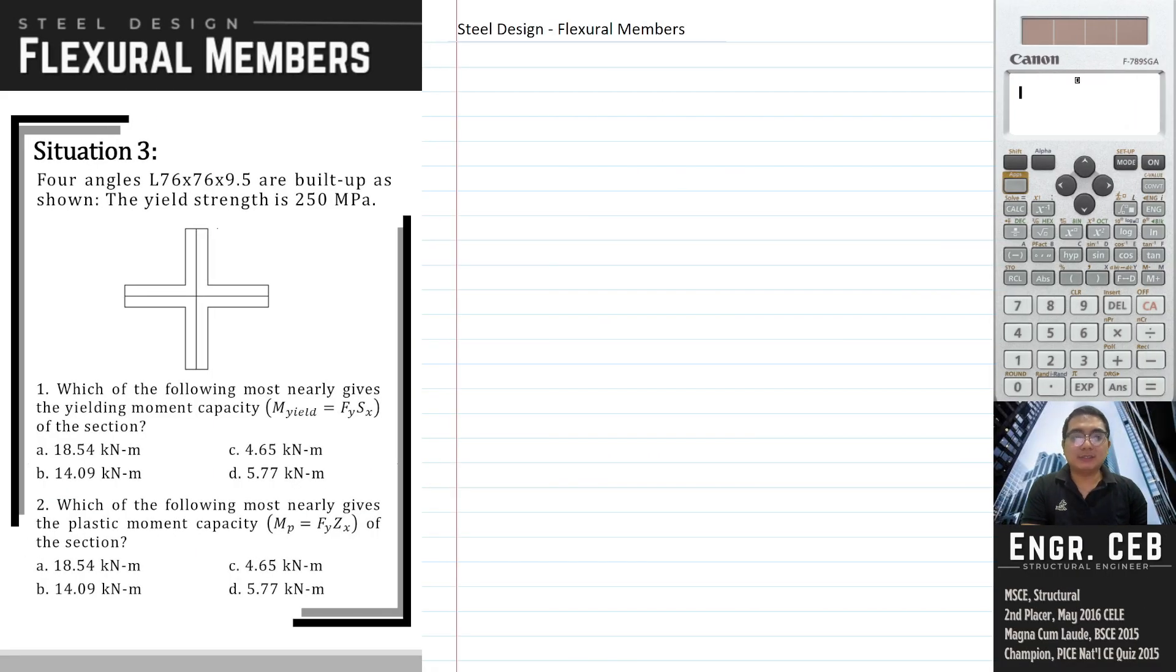Situation 3: Four angles L76×76×9.5 are built up as shown. The yield strength is 250 MPa. Which of the following most nearly gives the yielding moment capacity of the section?